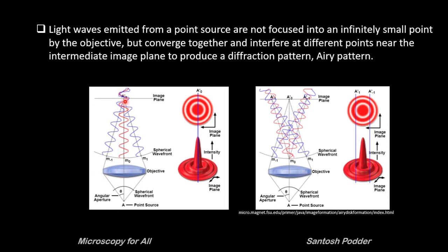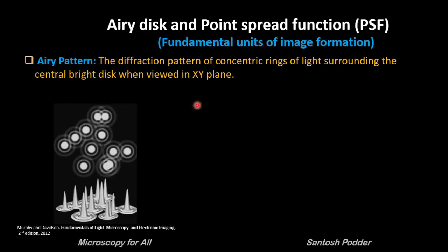You can see that constructive interference is happening at the center, forming the central maxima with highest intensity, followed by destructive interference causing the first minima with reduced intensity. These happen in the intermediate image plane to produce a diffraction pattern known as the Airy pattern. We now learn that a single point of light is never really seen as a point in the microscope, but rather as a diffraction pattern containing concentric rings of light surrounding the central bright disc when viewed in the XY plane. These are called the Airy pattern.